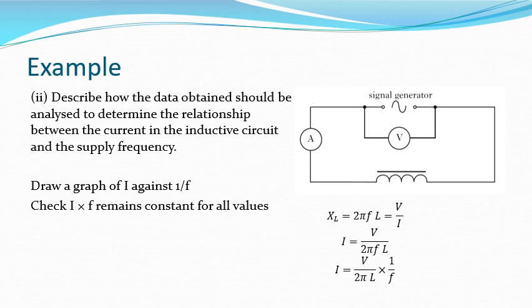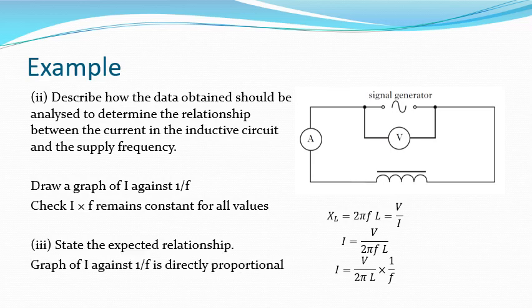Alternatively, multiplying I by f gives a constant equal to V/(2πL) for this particular inductor and experimental conditions. If all those calculated values are constant across the set of readings, that proves the relationship. So we either look for a straight-line directly proportional graph, or we check for constant values of I × f across all readings taken.